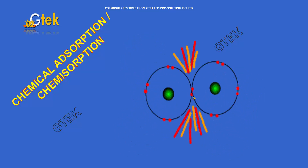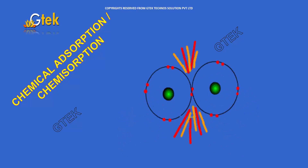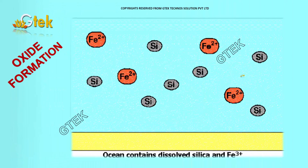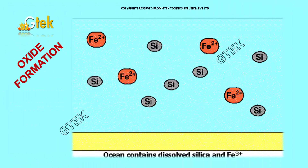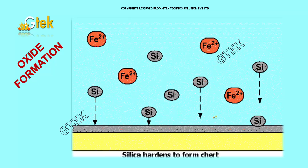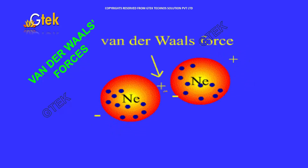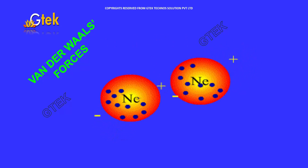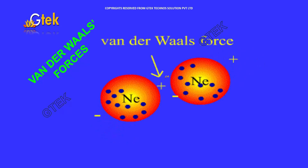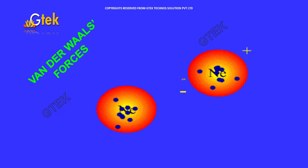Chemisorption is nothing but chemical adsorption — how chemical adsorption makes bonding among chemicals. Apart from this, oxide formation: how oxides are formed. Among chemicals or elements there will be a force which reacts effectively for combining. That's referred to as Van der Waals forces.